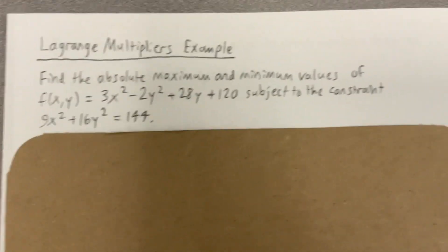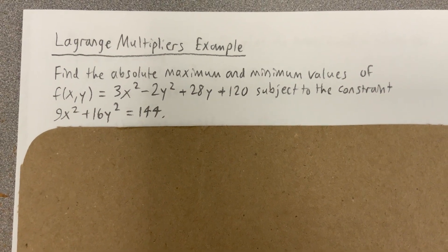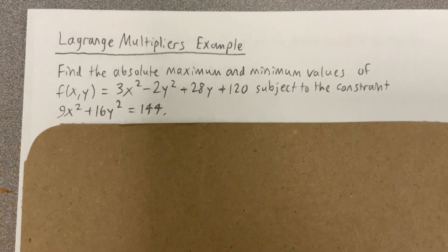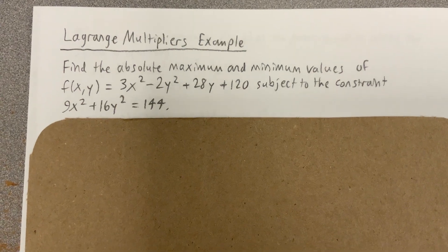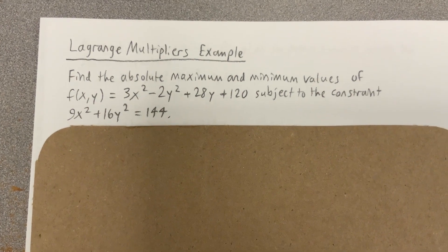Find the absolute maximum and minimum values of f(x,y) = 3x² - 2y² + 28y + 120 subject to the constraint 9x² + 16y² = 144.